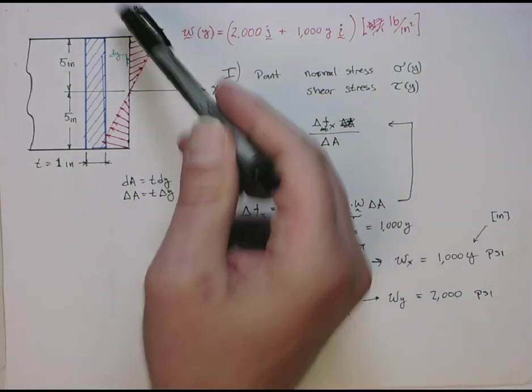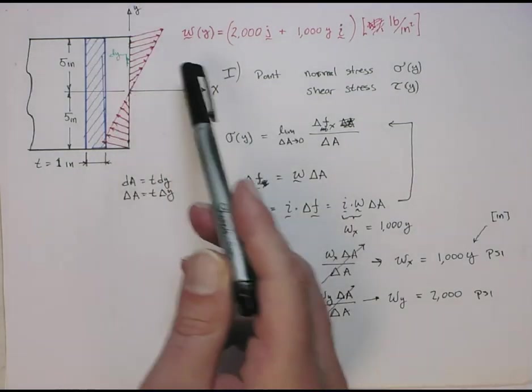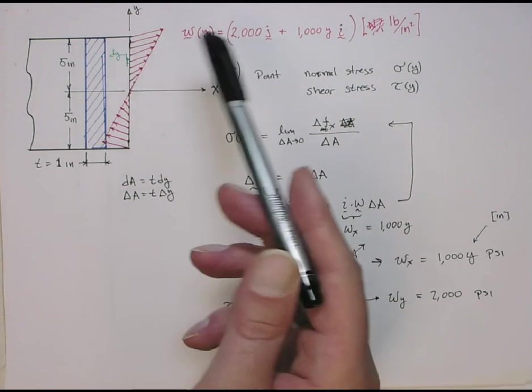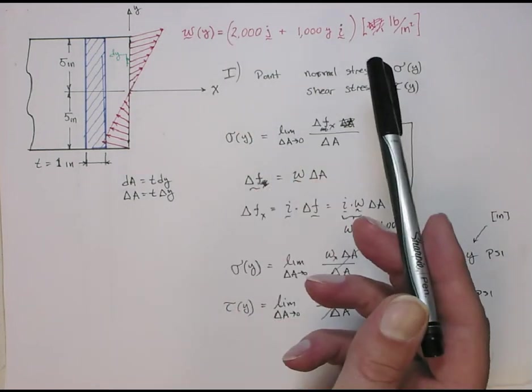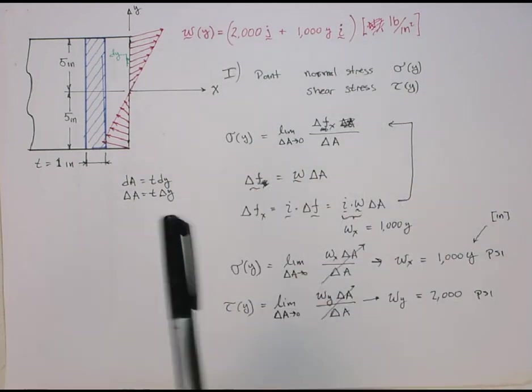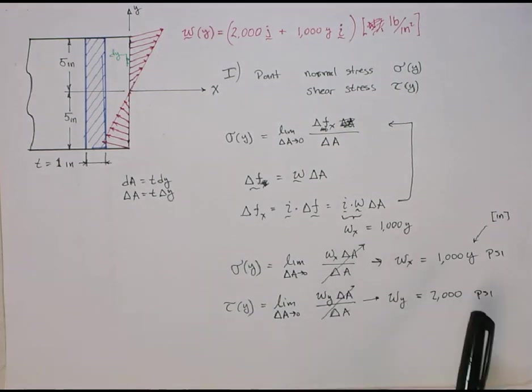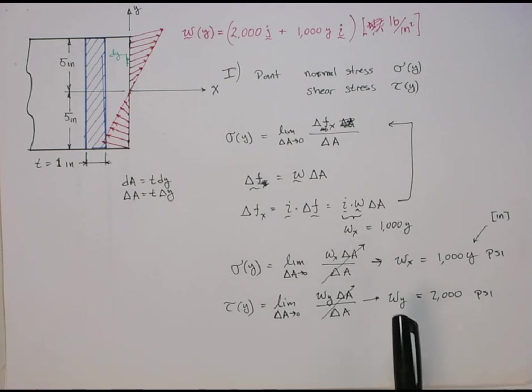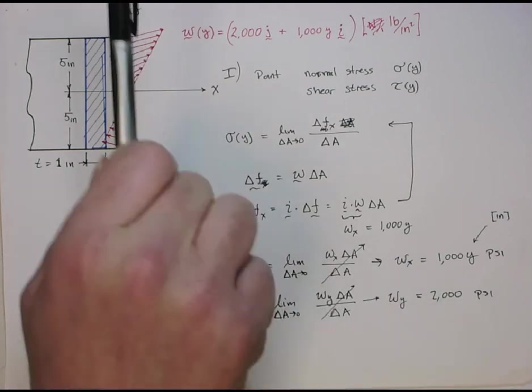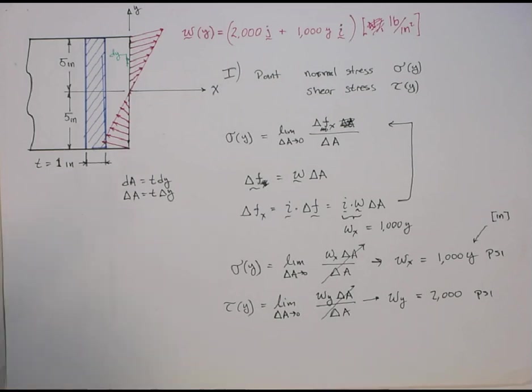All right. So, again, just to summarize, this internal force distribution, if it's given to you in terms of a distributed traction, load per area, those components actually are the stress components on that face. And in this particular situation, we've given you one where basically in the y direction is a constant, and in the x direction, it has a linear dependency.